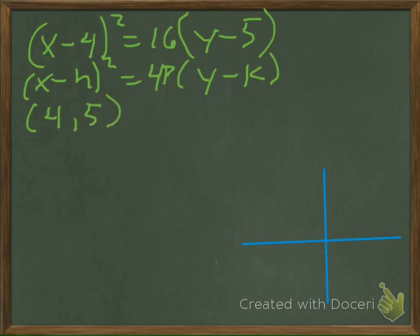Let's find our p. If we're going to find our p, we're going to equate these two guys, and that's what I'm doing here. I'm going to say 16 is equal to 4p. Why are we doing this? P is the distance from the vertex to the focus and the vertex to the directrix, and our distance is going to be 4.